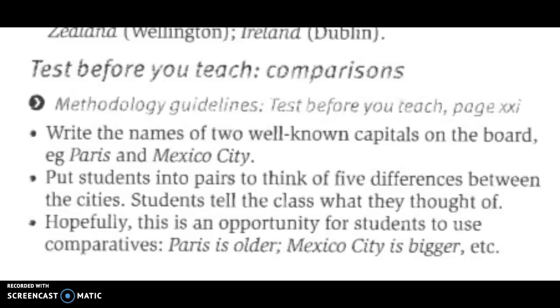Here's a good idea in the teacher's book, I think, to write the names of two well-known capitals on the board. Choose two that are relevant to your students and get the students to think of five differences between the cities. And hopefully this is going to generate some use of comparative adjectives. You can always prompt the students by telling them what adjectives they could use. Tell me about polluted. Make a sentence with beautiful, for example.